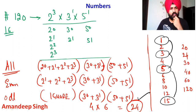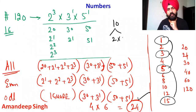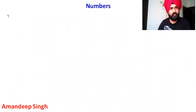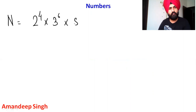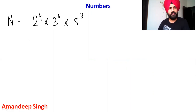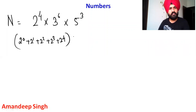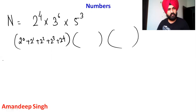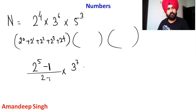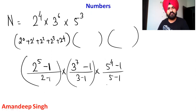Whatever condition is given — if we need factors divisible by 10, then 10 = 2 × 5, so both 2 and 5 must appear. That means 2⁰ is not allowed, and 5⁰ is not allowed. For a number like 2⁴ × 3⁶ × 5³, the sum of all factors formula uses GP: (2^5 − 1)/(2 − 1) × (3^7 − 1)/(3 − 1) × (5^4 − 1)/(5 − 1). If you need even factors, ignore 2⁰ and include 2¹ upward.